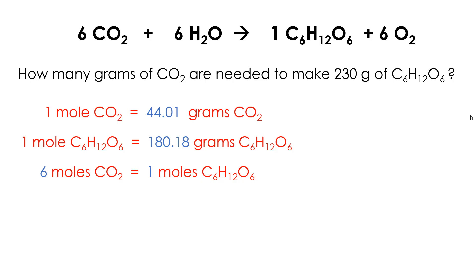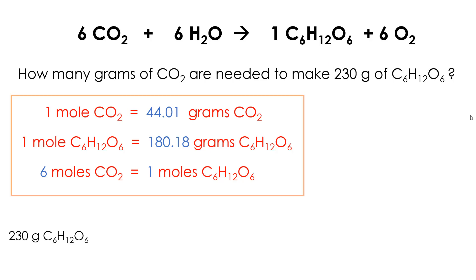Now I have my three facts and I'm going to start doing the actual problem. I take the starting quantity they give me — 230 grams of glucose — and I write that all down, including the unit and the chemical. What I'm going to need to do is use these equality relationships and turn them into fractions that I can use to convert between them.